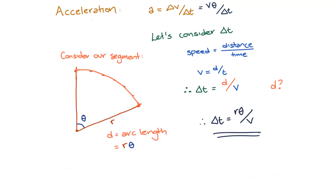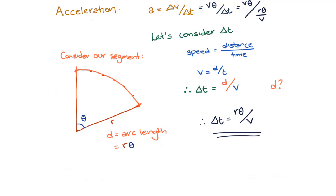So the acceleration is equal to the change in velocity over the change in time, and we're looking at an instantaneous moment in time. If we plug in our values, we find that our acceleration is equal to v theta divided by r theta divided by v. And if you cancel out the thetas and move the v up to the top, we get that the acceleration a is equal to the velocity v squared divided by r the radius. We have now found the magnitude of the acceleration of an object undergoing uniform circular motion, also known as the centripetal acceleration.